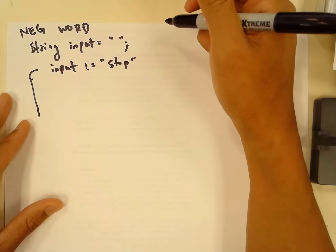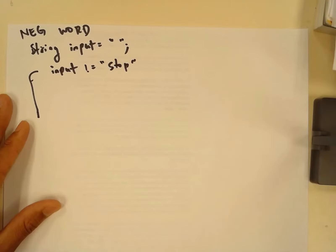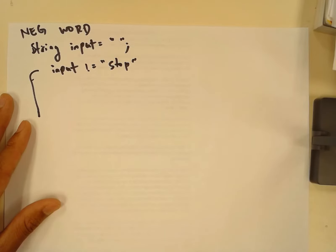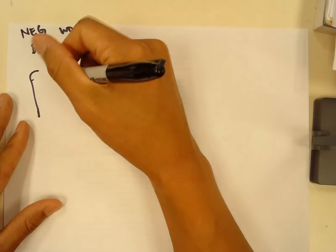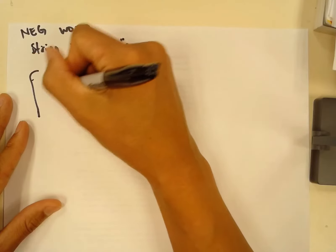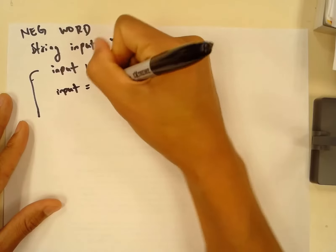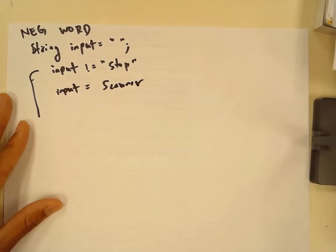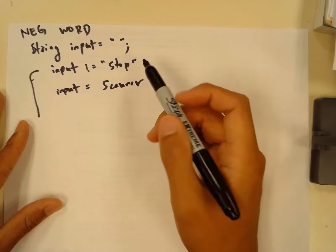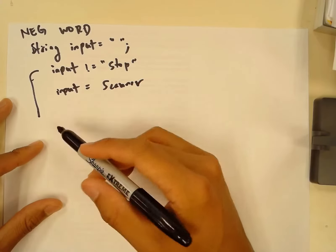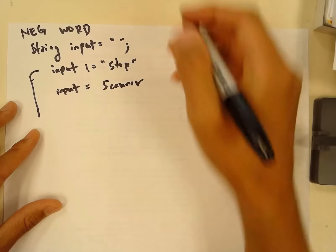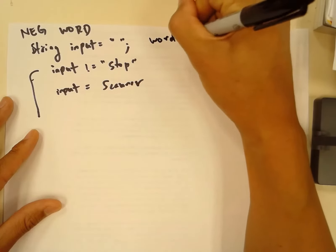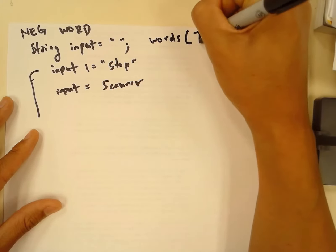We come inside the loop and the first thing we want to do is take in the input, so we say input is equal to scanner — the user is entering their input. Then we want to check to see if what they entered is in the words array. We do have a words array that is four elements long with four words in it.